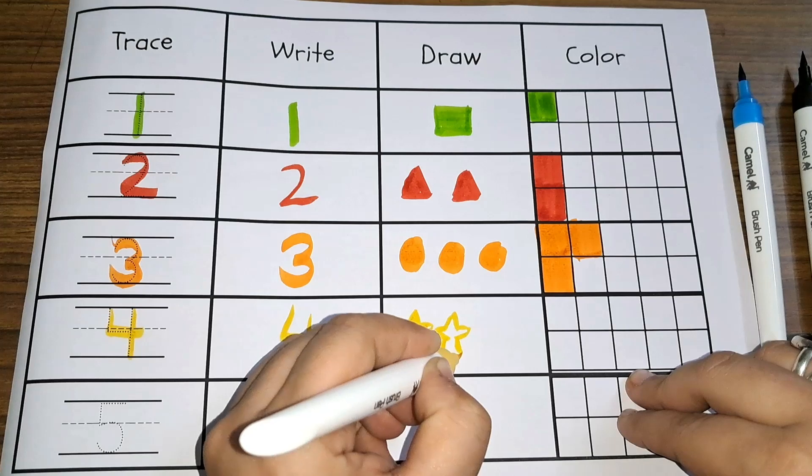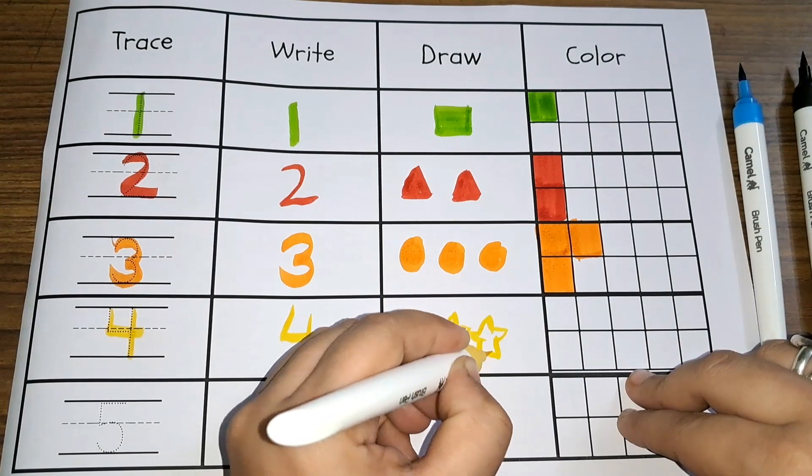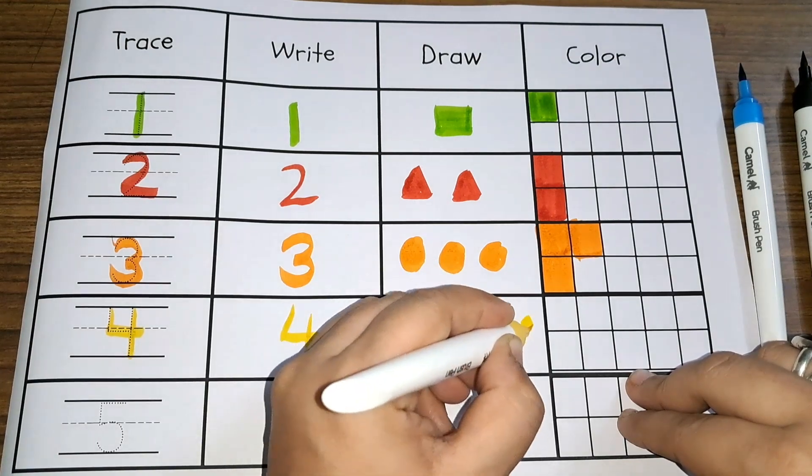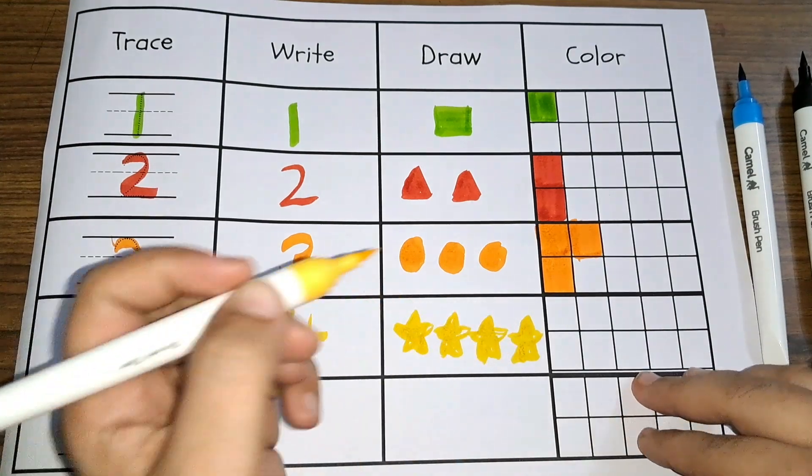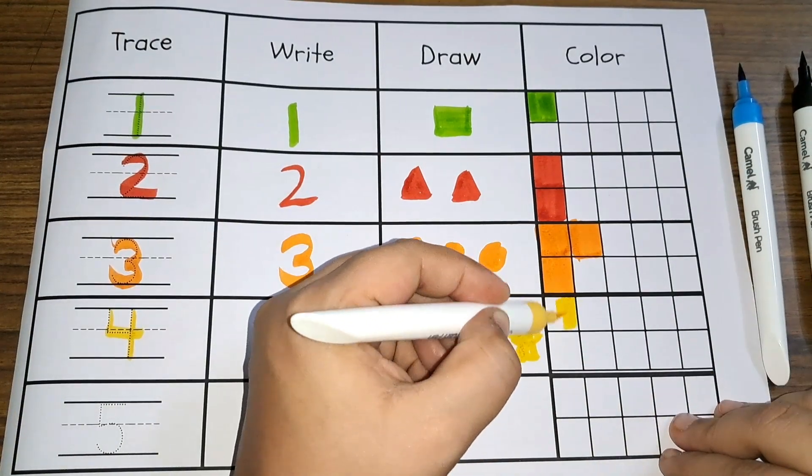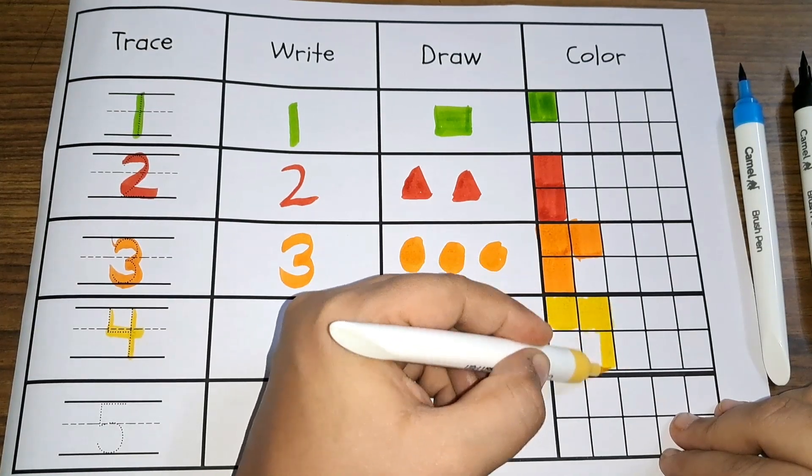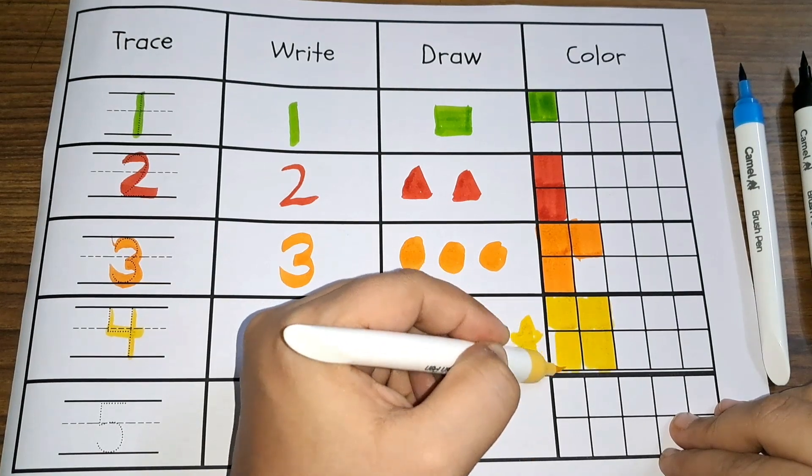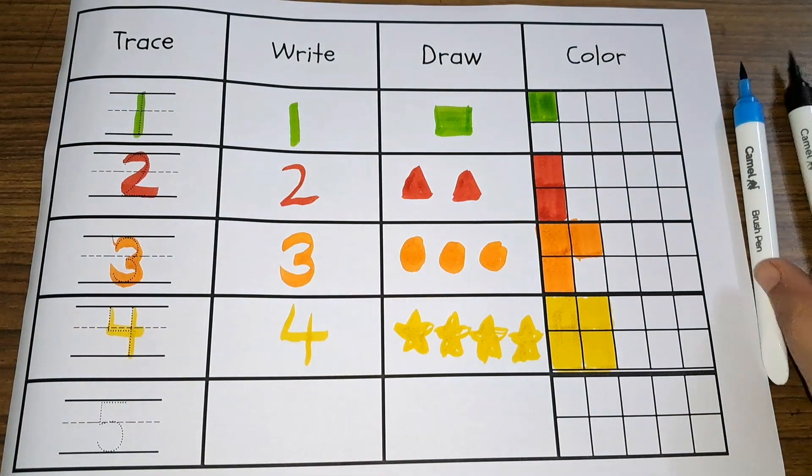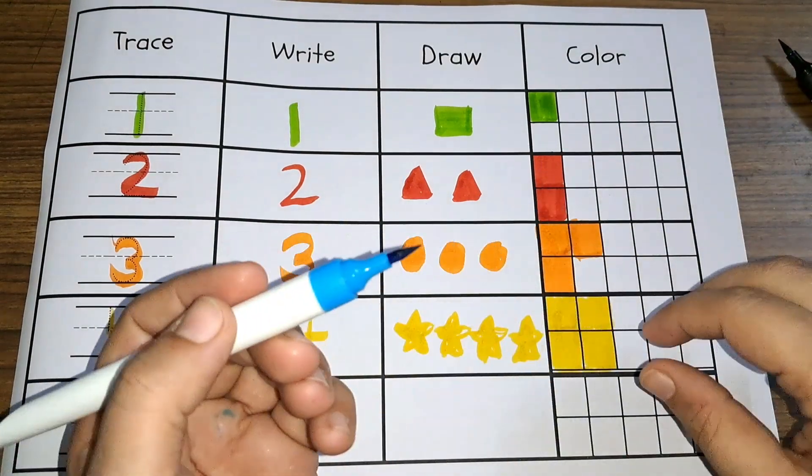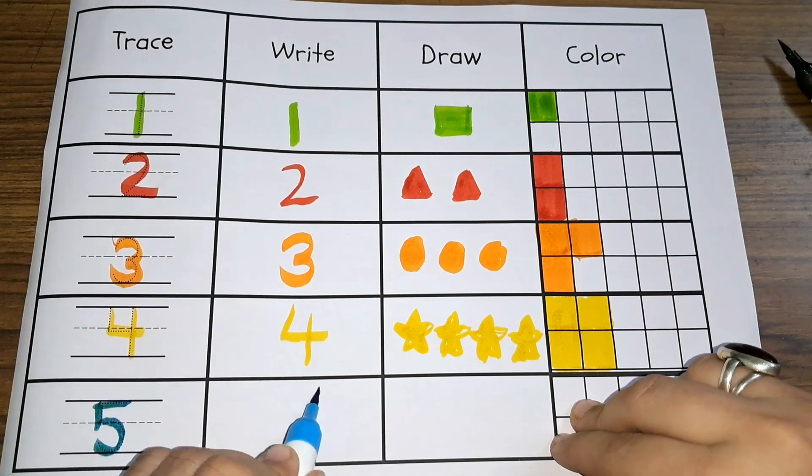1, 2, 3, and 4. 4 stars: 1, 2, 3, 4. 4 squares, yellow color. Blue color, number 5, number 5.